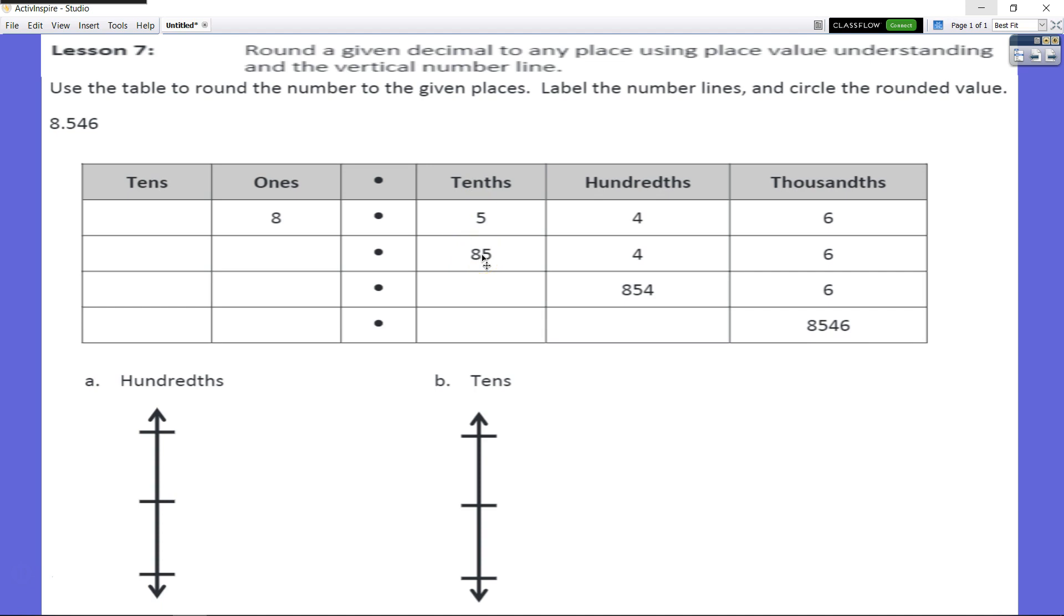So we also could take those 85 dimes and cash those in at the bank and get eight hundred and fifty pennies. So that's our hundredths. So now we have 854 hundredths and six thousandths. Or we can get rid of all of our hundredths and then we would have 8546 thousandths. All four of these values are equal.